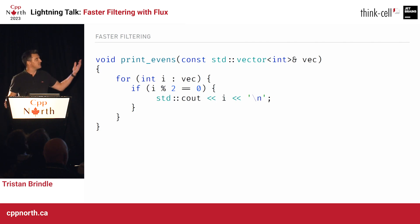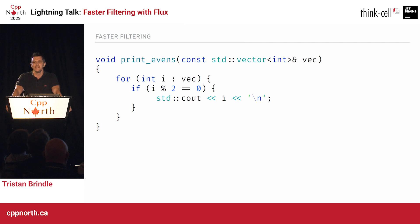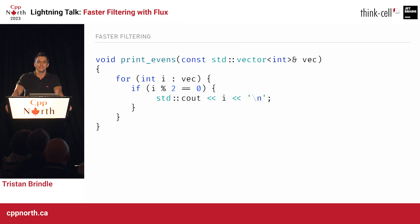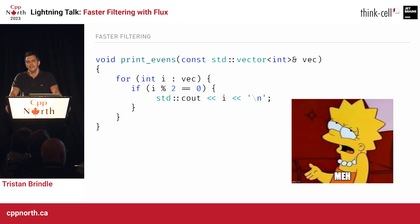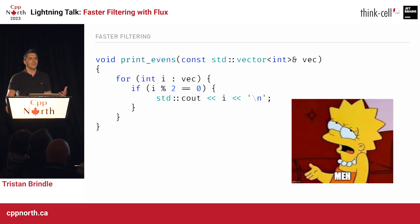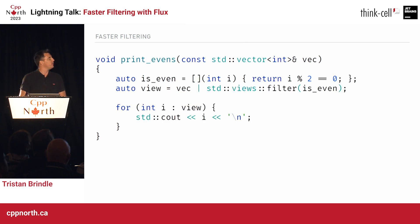So we write the function — it's very simple. We commit this code to our repository, and it so happens that at our organization we've got this really sophisticated AI-powered code analysis tool that measures how cool our source code is. It uses sophisticated machine learning algorithms, and it looks at this code and goes: this is C++11. This is not very exciting. So we need to make our code cooler. Well, we can use ranges.